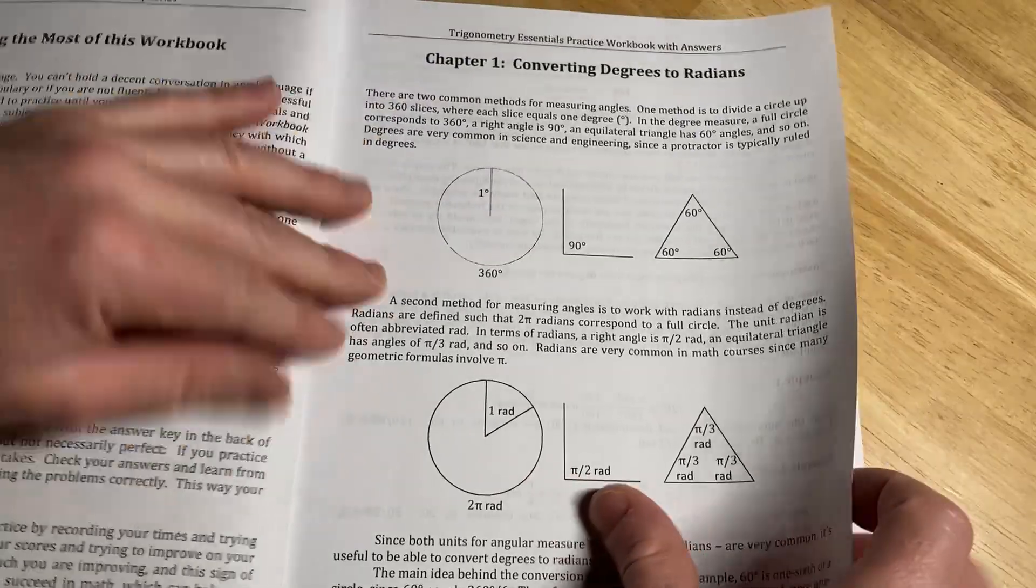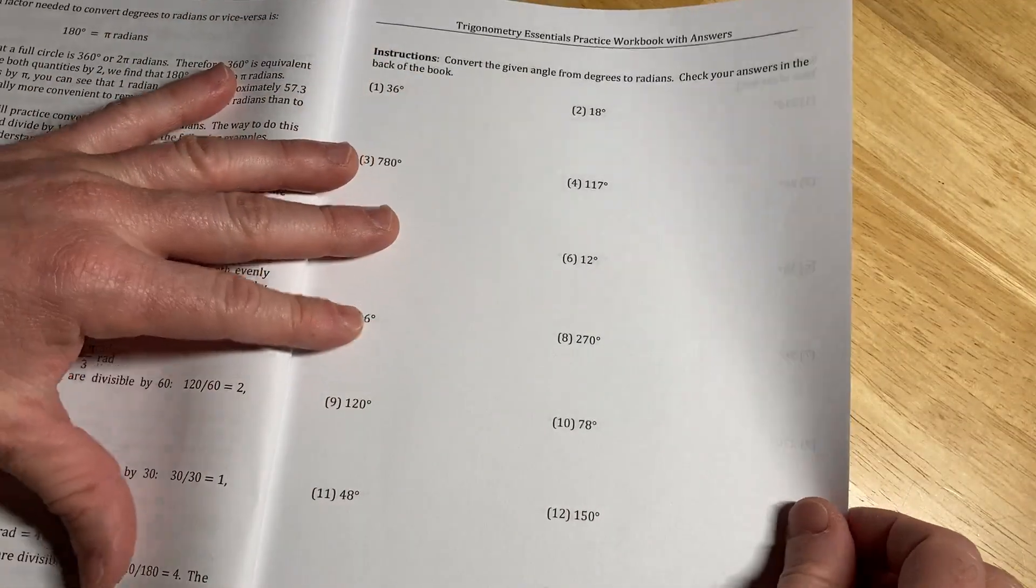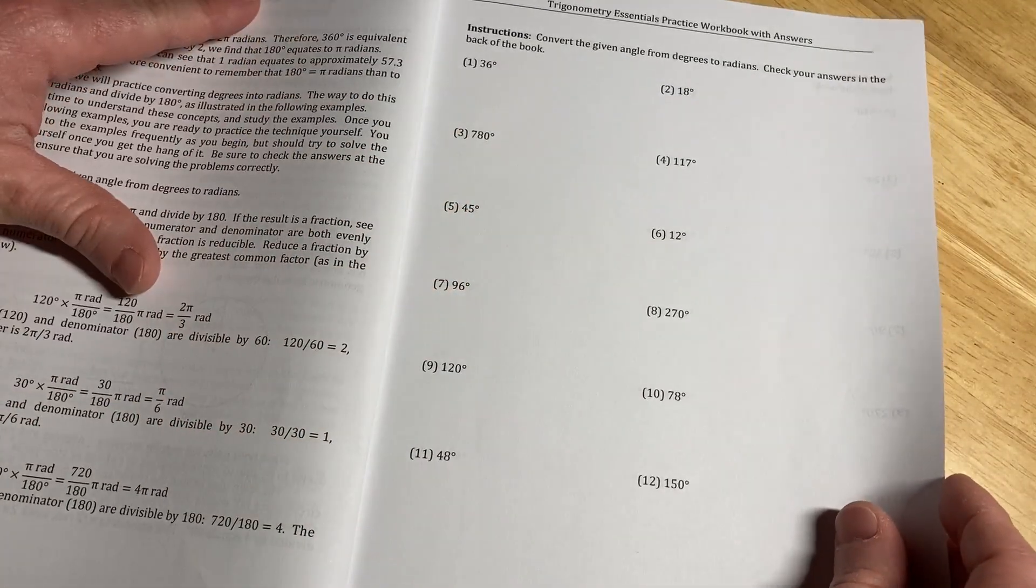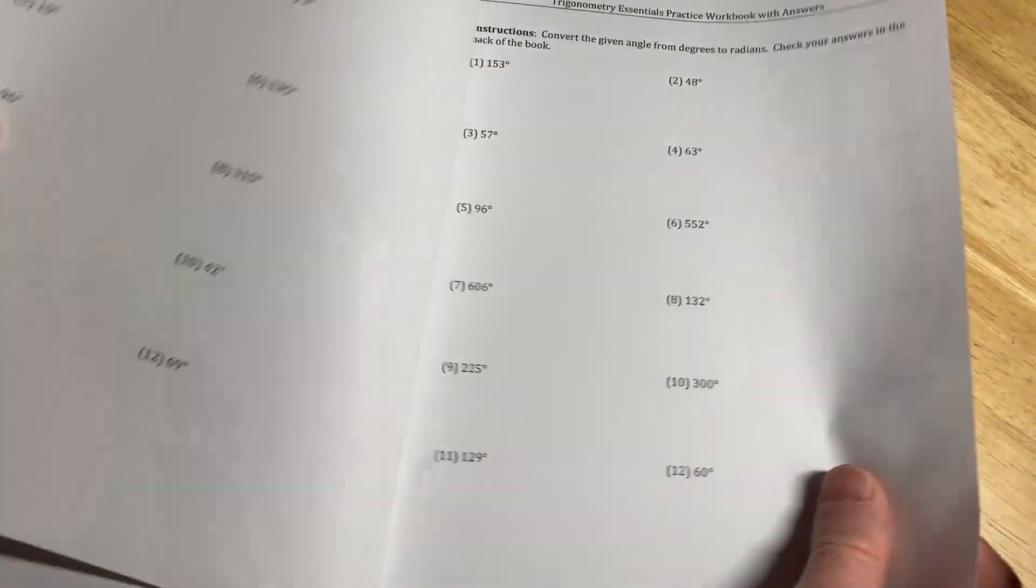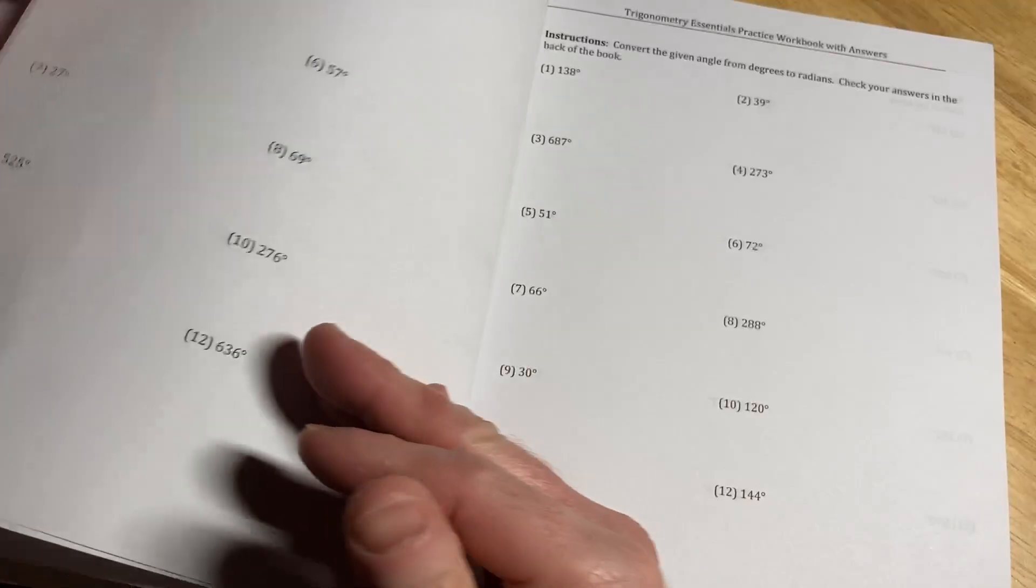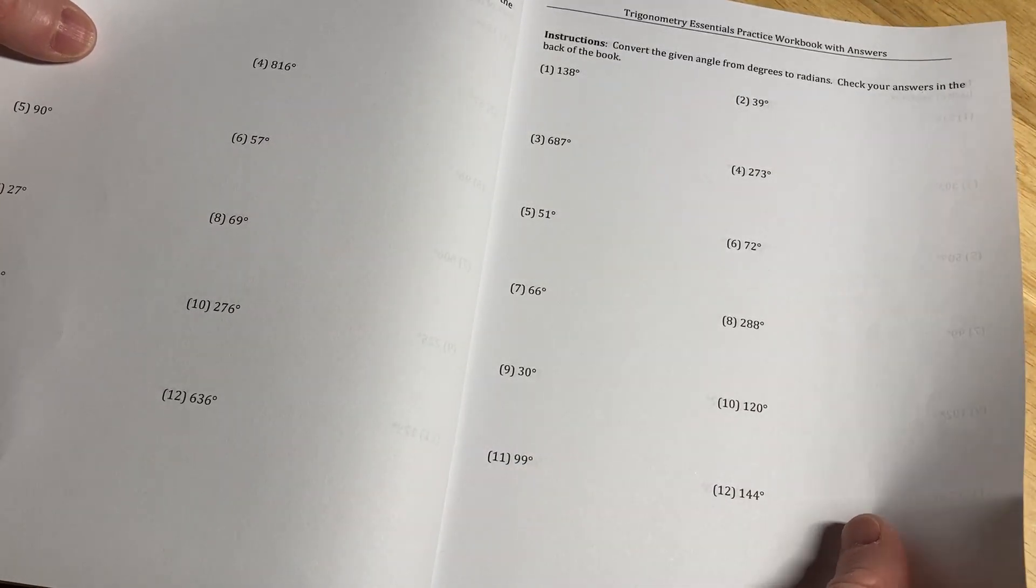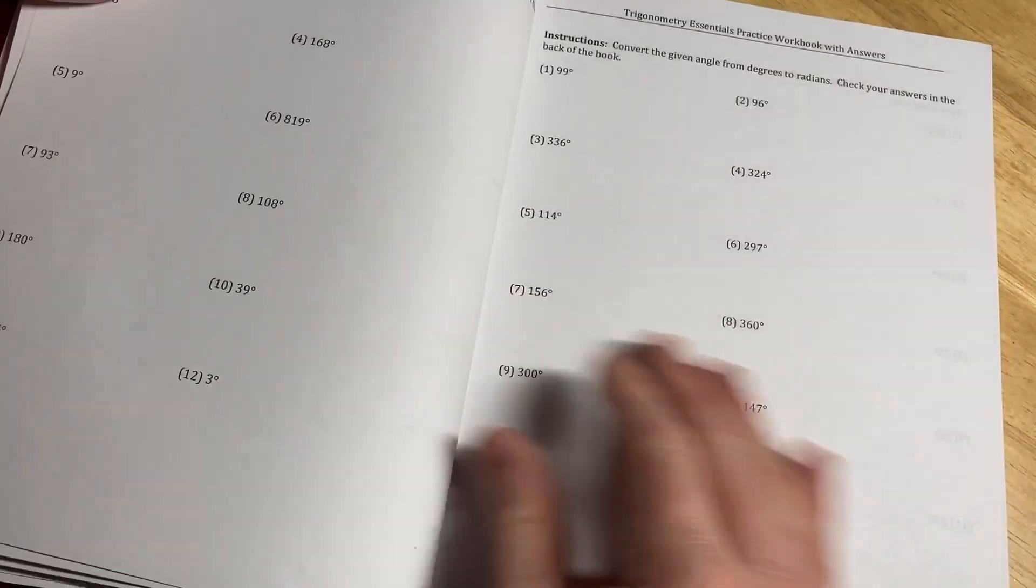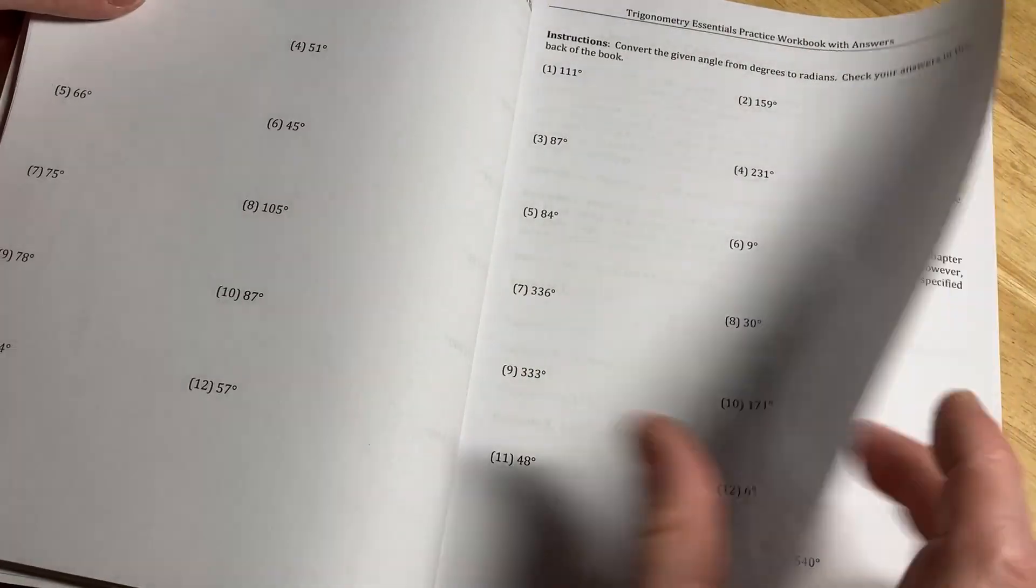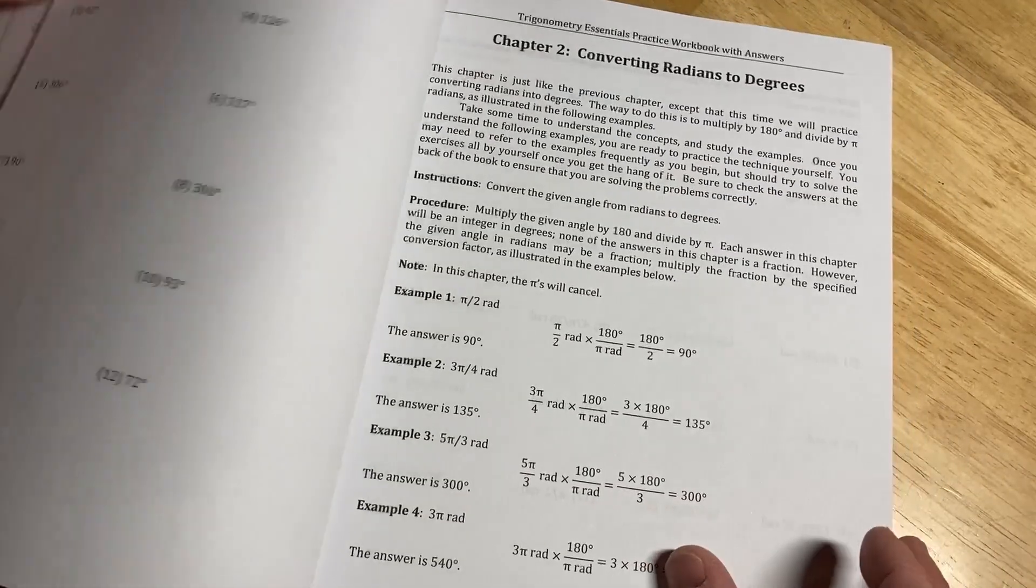So here's where it starts. Converting degrees to radians. So you do some reading. You do some more reading. Then you have some exercises. And you can check your answers in the back of the book, which is excellent. Plenty of exercises here. Whenever there's easier problems with shorter solutions, there's usually more exercises. When the problems are more involved and they're longer, there are less exercises. You can see here there's tons of exercises because these problems are really easy. So it's easy to throw the problems on here and put solutions in the back.